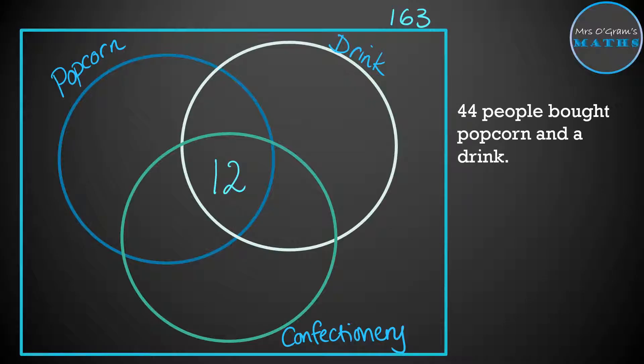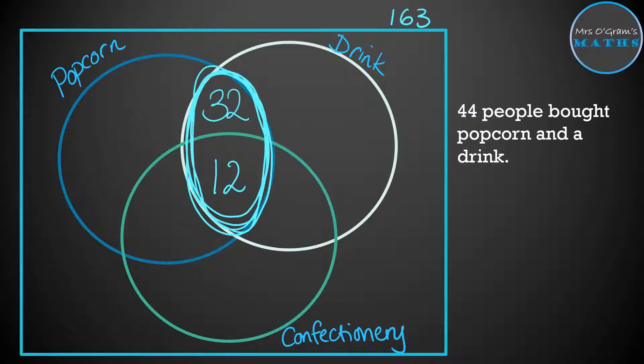We're told that 44 people bought popcorn and a drink, so that's 44 in total where the popcorn and drink circles overlap. All of that section has to add up to 44, and we've already got 12 in part of it, so what's left is 32.